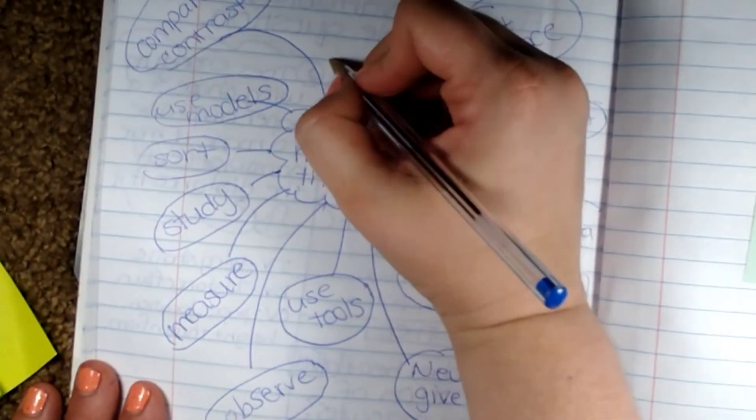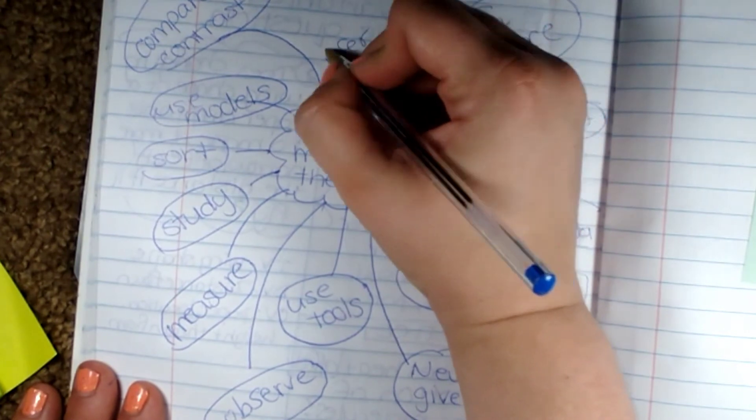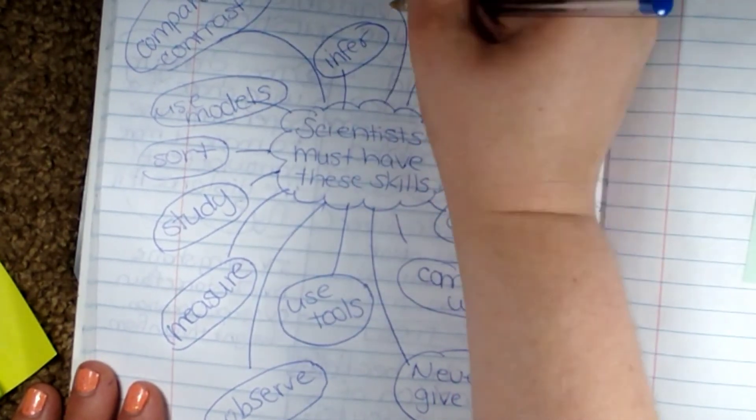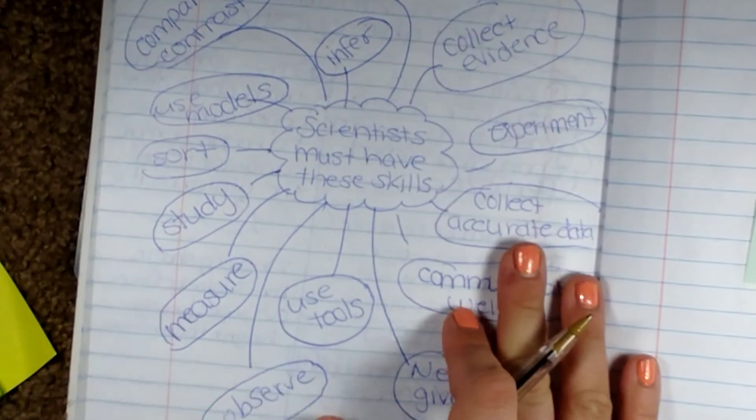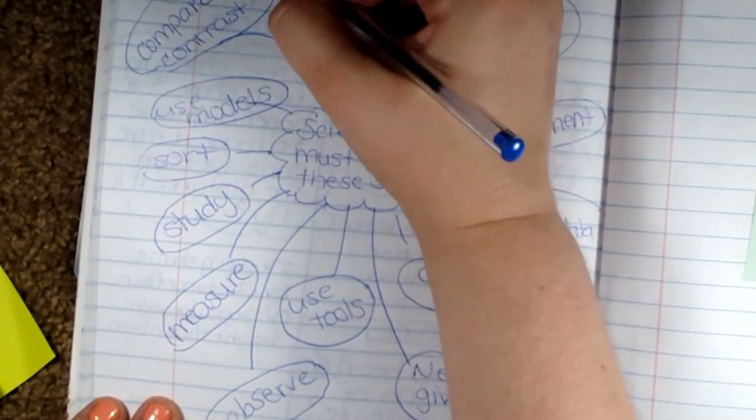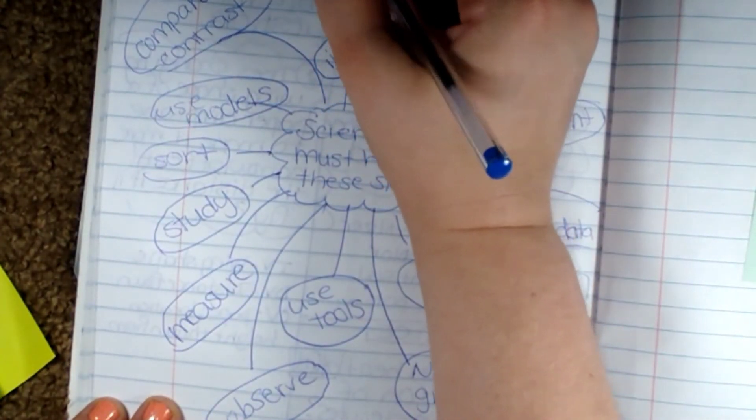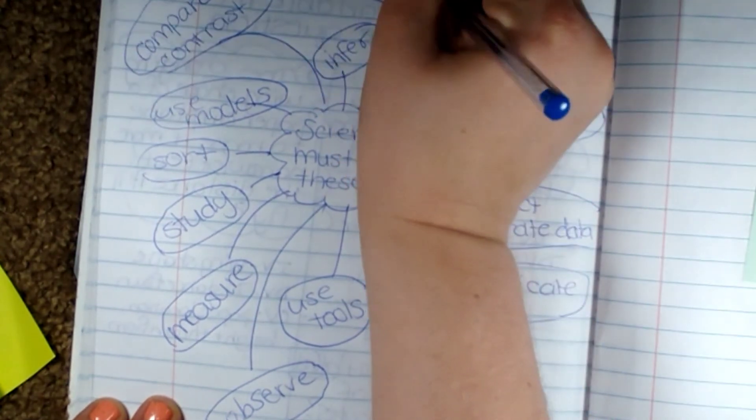They have to be able to infer, take what they already know and put it together with stuff that they just found out. They have to be able to classify, put things in groups.